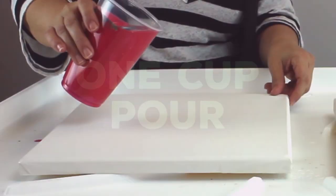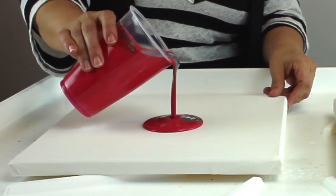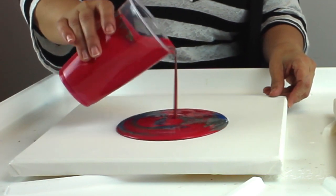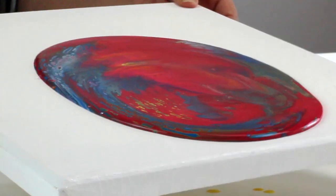A second technique is the one cup pour, but instead of flipping your canvas onto your cup, pour the cup directly onto the canvas.